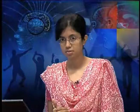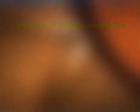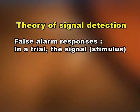We detect signals through four ways. The first is a hit response — the stimulus is present and the subject successfully identifies the signal. For example, you are walking on the road, you see a speedy bike coming towards you, and you move away — that is a hit response. Then there is a miss response — the subject misses identifying the presence of a signal. Same situation: the speedy bike is coming, but you are on the phone, you don't pay attention — possibly an accident.